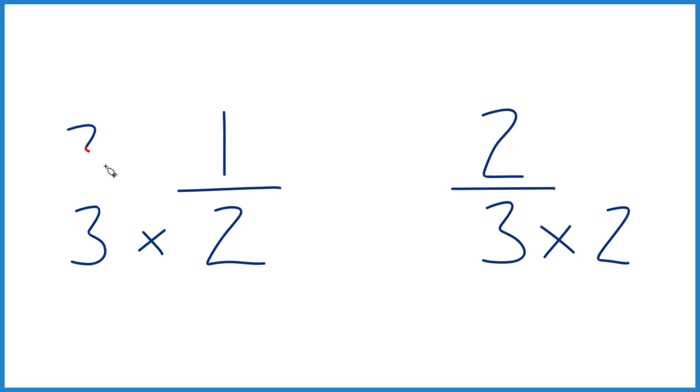But we also need to multiply the numerator up here as well, because three over three is one, so that's just multiplying by one. And here let's multiply by two, so we have two over two.